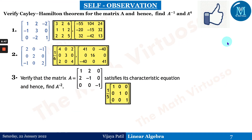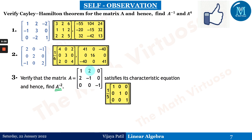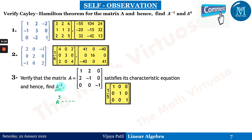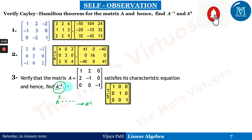This is a self-observation slide. We have covered verification of Cayley-Hamilton theorem, A inverse, and A⁴ for the first two questions. The third question asks you to verify CH theorem for the given matrix and find A to the power minus 2. You will get a λ³ type characteristic equation. Think about which factor you need to pre-multiply with — do write your answer in the comment section!